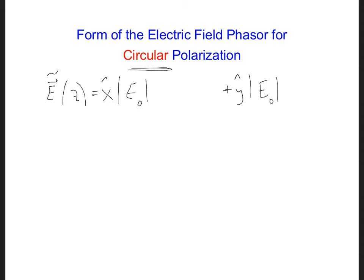They can both have this constant E to the J phi knot term, which is constant in space. Then they have to be 90 degrees out of phase with each other so that it points along the x direction, and then 90 degrees later it'll be pointing along the other direction, and so forth.